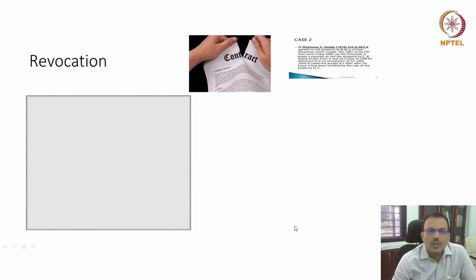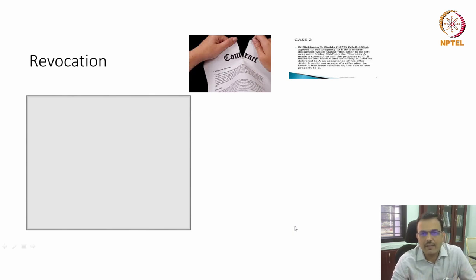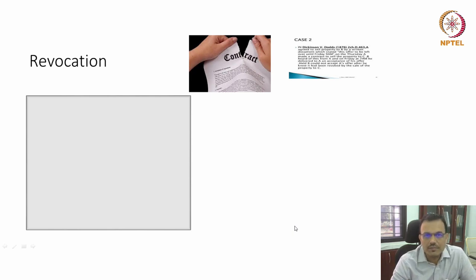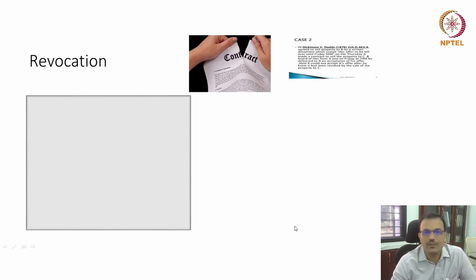Friends, let us come to the concluding part of offer and acceptance, in which we will be discussing first revocation, and after which we will discuss where the contract is concluded. But first, revocation. The topic of revocation is very important to understand the contract, because once an offer is made and an acceptance is made, we have seen the statement that it is like a lighted matchstick to a train of gunpowder. The practicality of contracts today is about reconsidering the offer or reconsidering the acceptance — this is what is called the law of revocation.